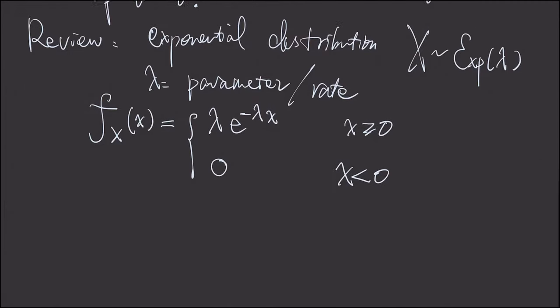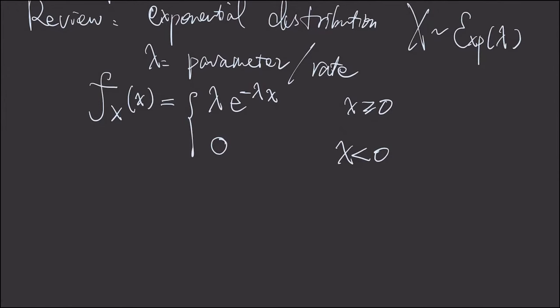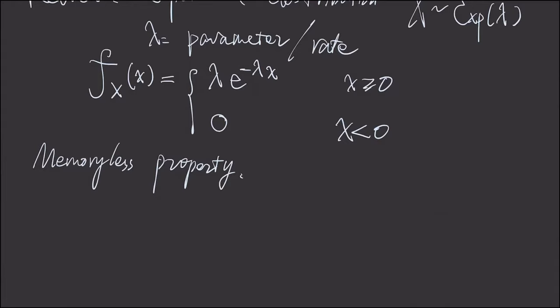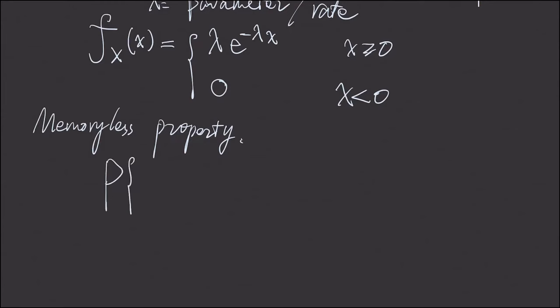And then what we're going to review is a famous property of this exponential distribution. It is a memoryless property. It's in a way very similar to what we have learned about this Markovian property. That is, the memoryless property is the conditional probability of X is greater than s plus t, given X is greater than t, is the same as the probability of X is greater than s, where s is the difference between s plus t and t.